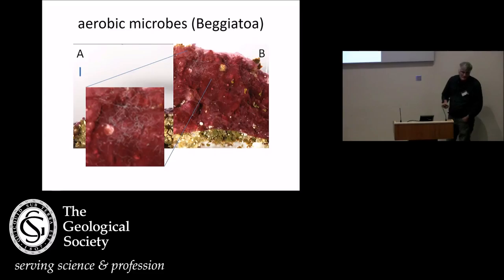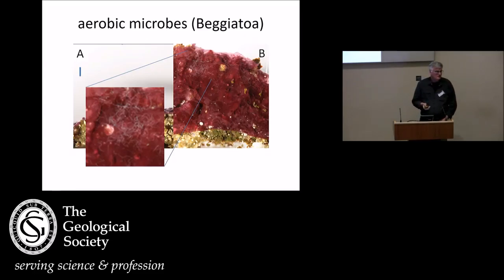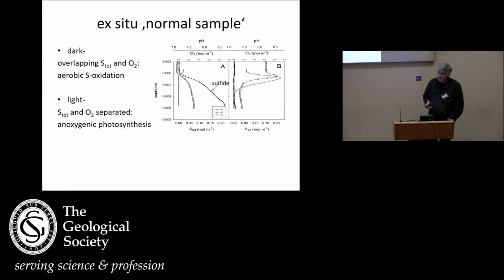And we did indeed find strictly aerobic bacteria in this zone, ammonium oxidizers and aerobic sulfur oxidizers. You can actually see them here. These are sort of fine hairs. These are filamentous Beggiatoa sulfur oxidizers. So such ephemeral microhabitats can sustain aerobic life.